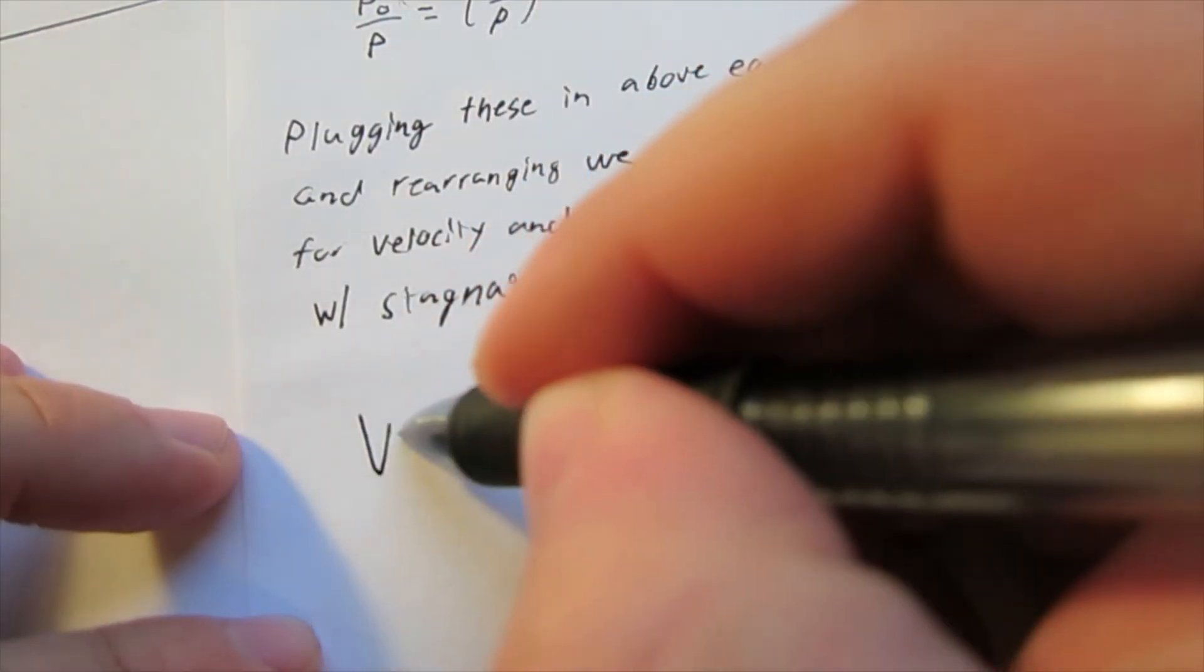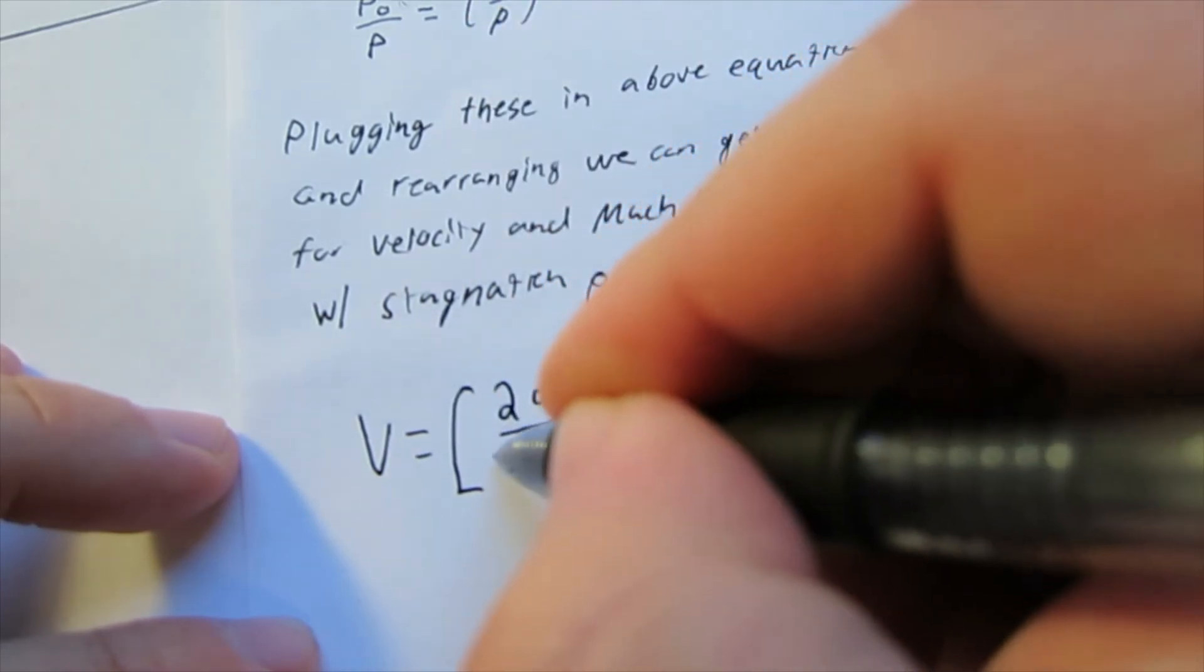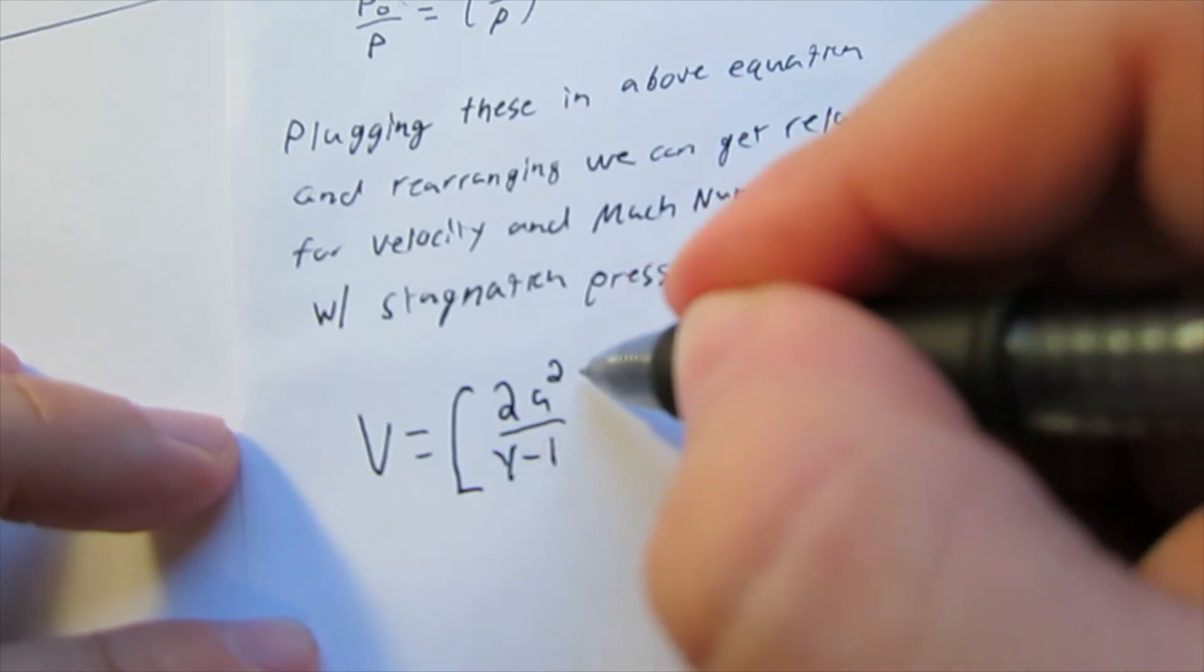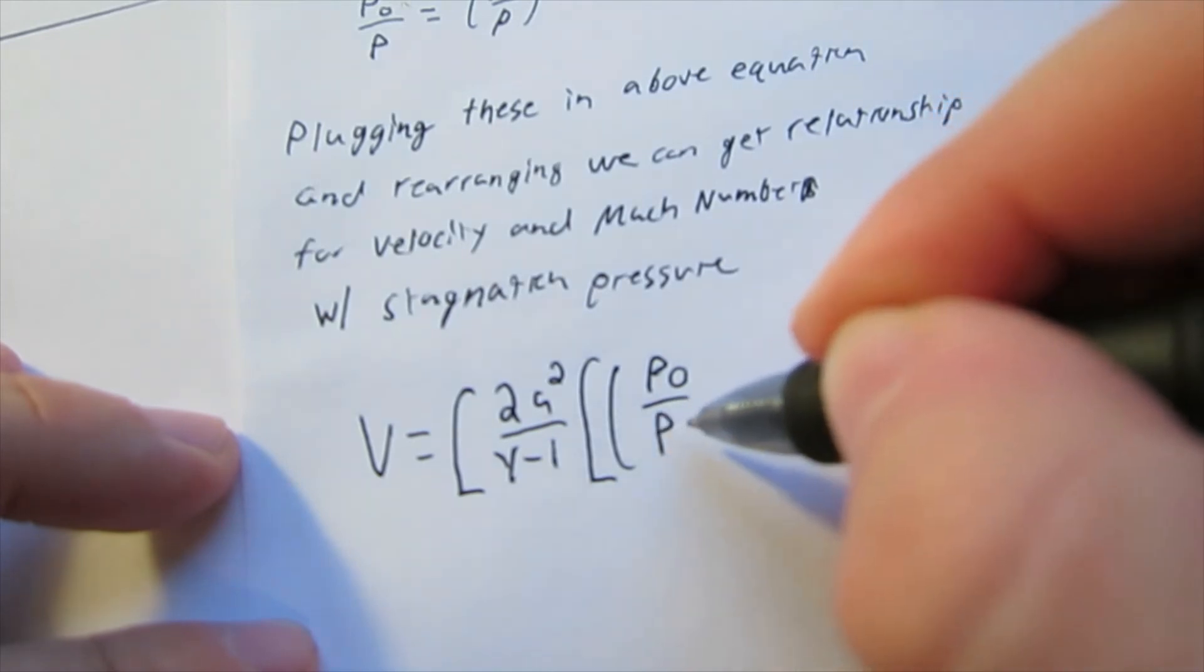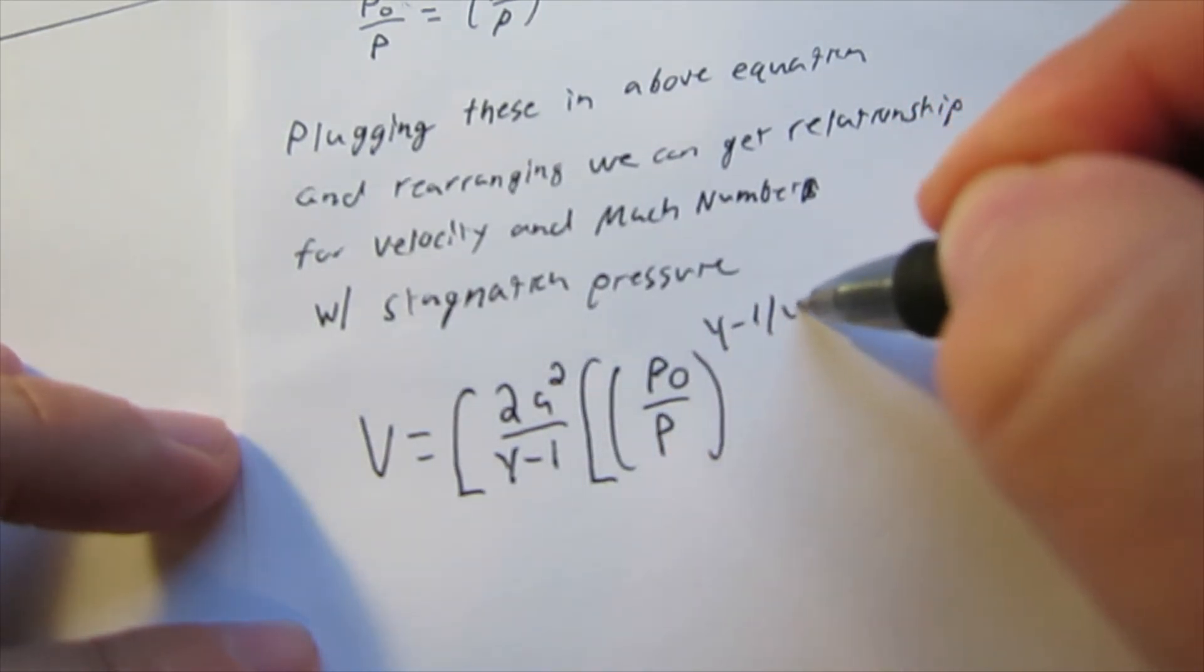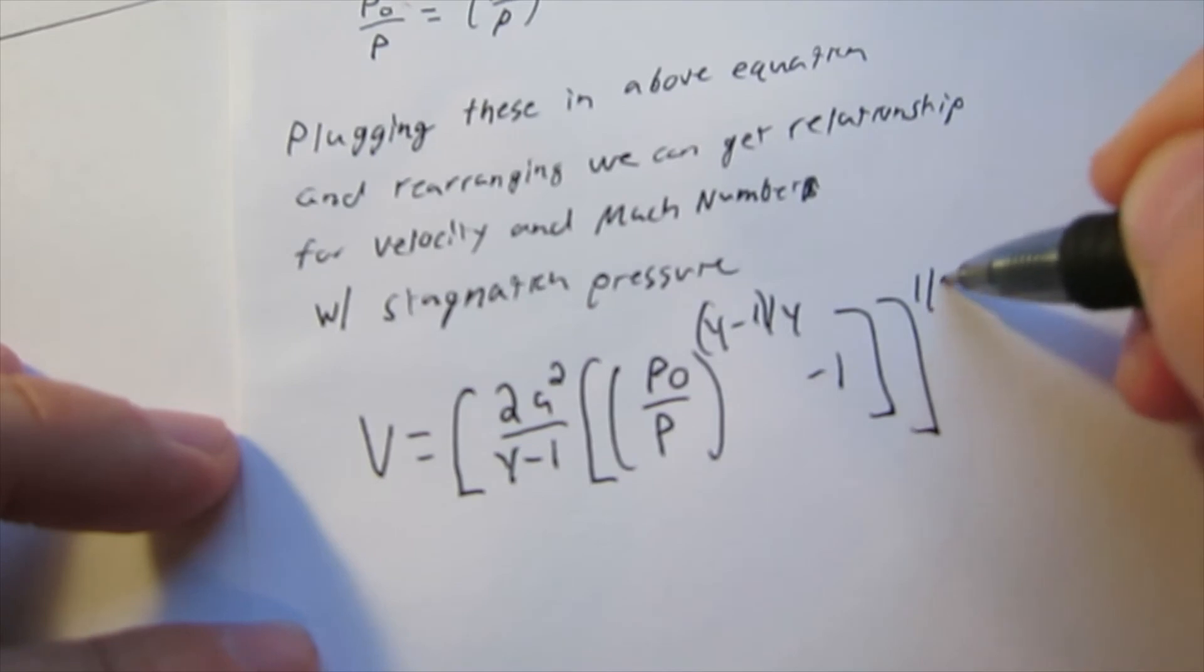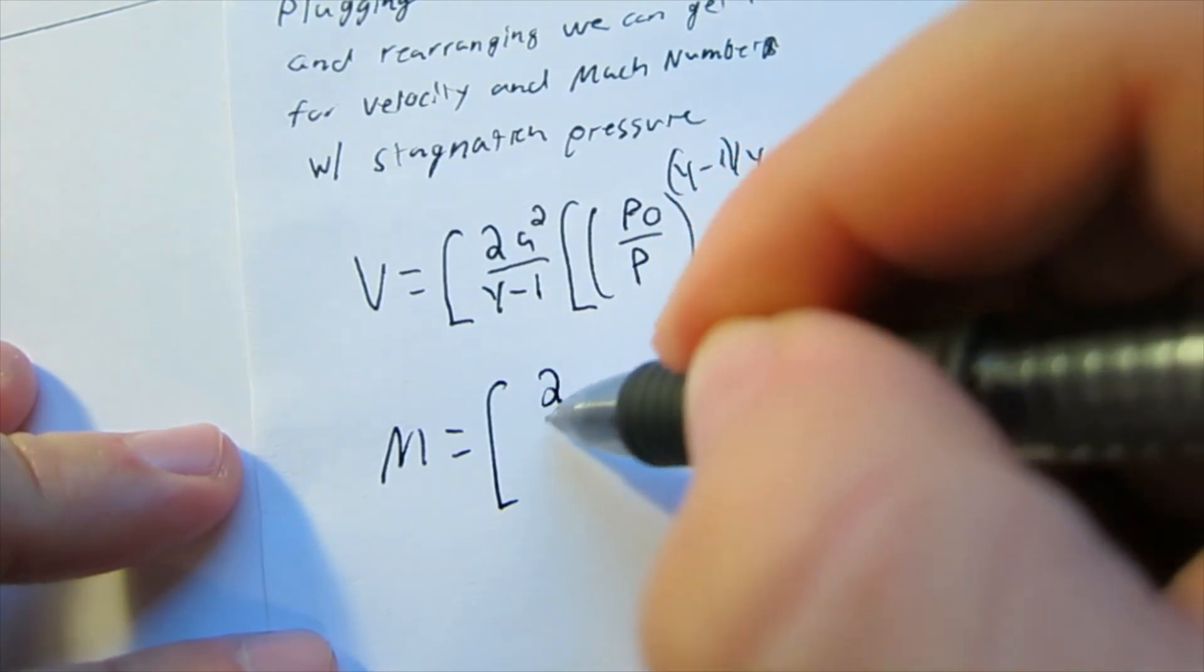So I'm going to write these out here, so velocity equals 2A divided by 1, that's 2A squared, so that's our speed of sound. And we also have our Mach number equals 2 divided by 1.